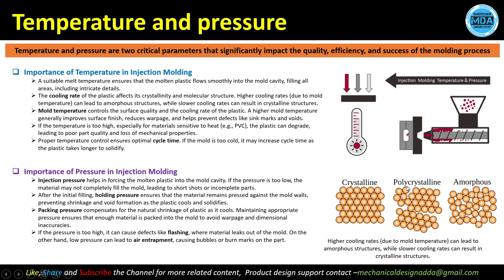The cooling rate of the plastic affects the crystallinity of the molecular structure. Here you can see the crystallized structure, polycrystalline structure, and amorphous structure. If your product is cooling at a very high rate, you can expect an amorphous structure. If your product is cooling slowly, you can expect a crystalline structure. In the injection unit, we need to maintain the proper temperature so that the granular material is properly melted and compressed.